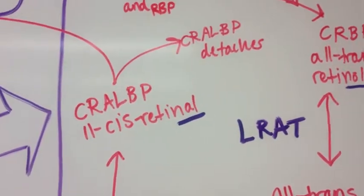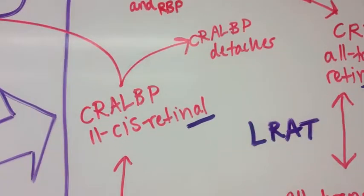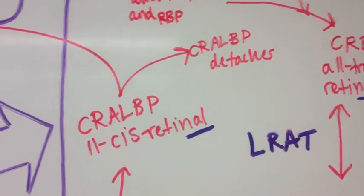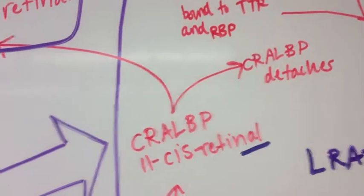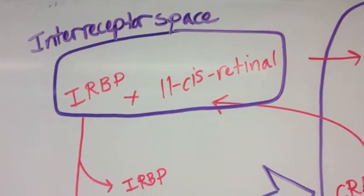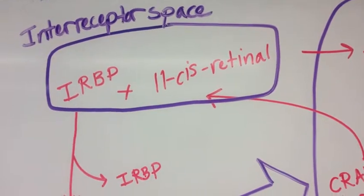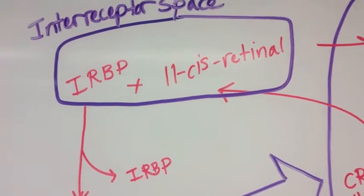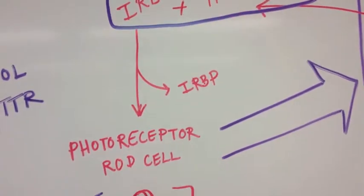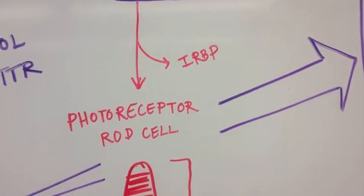CRALBP detaches and 11-cisretinol leaves the endothelial cell and travels to the interreceptor space where it is bound to IRBP and shuttles to the photoreceptor cell. Then, the IRBP disassociates.